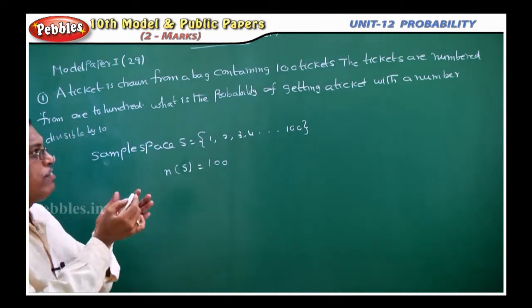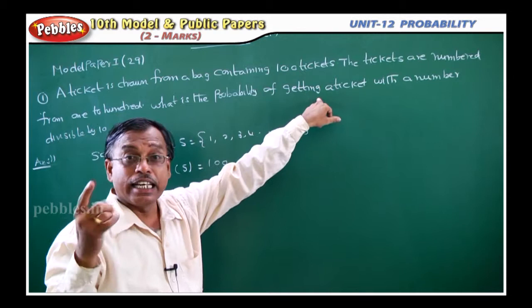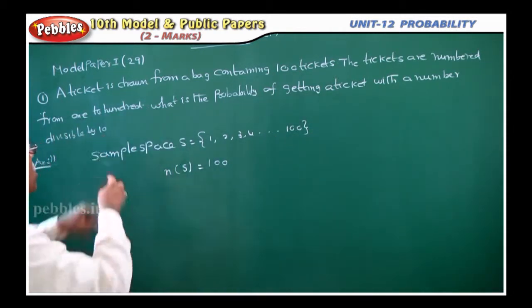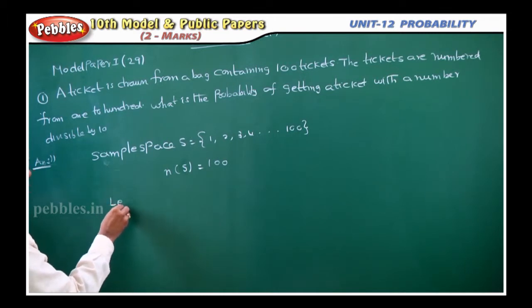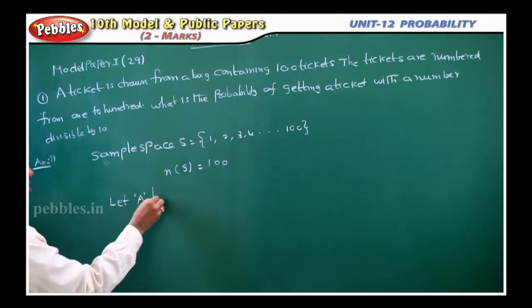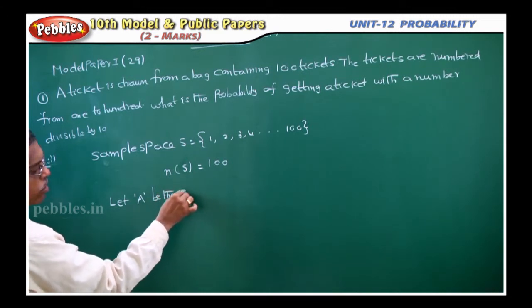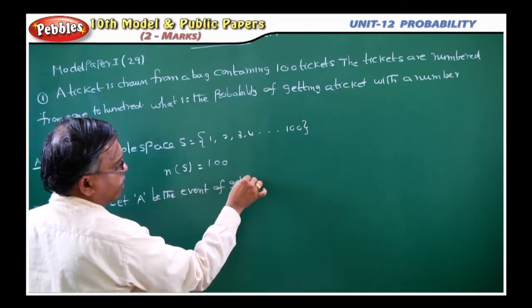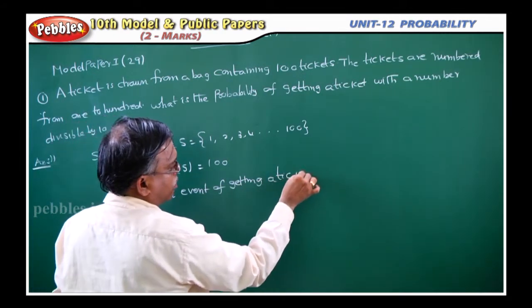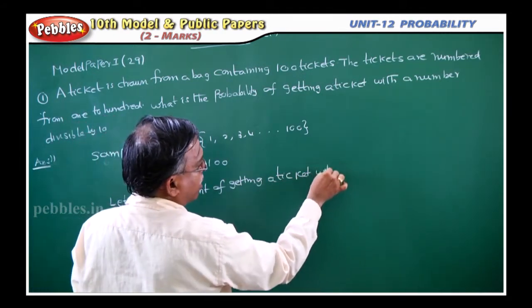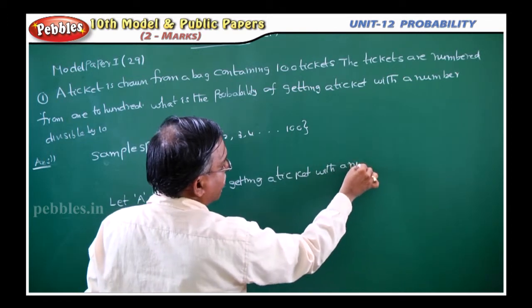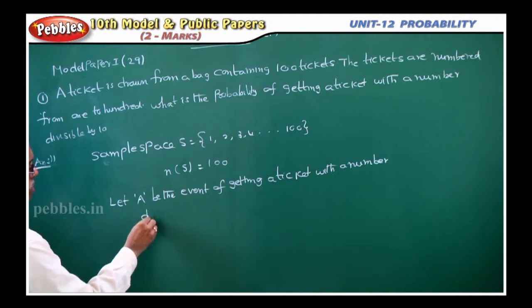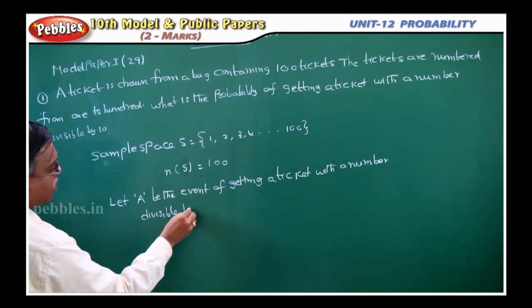Then, what is the event you should identify? What is the probability of getting a ticket with a number divisible by 10? So, this is your event. Let A be the event of getting a ticket with a number divisible by 10.